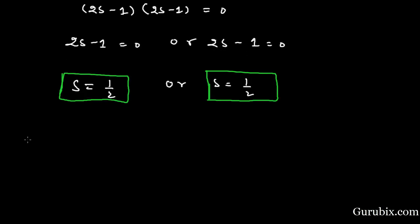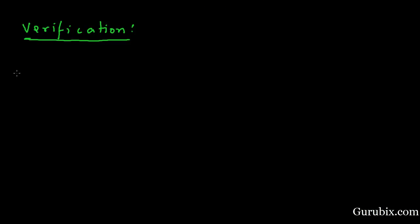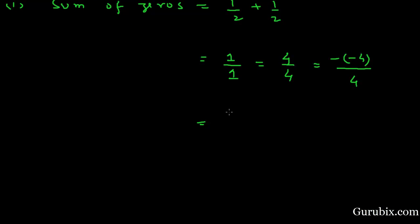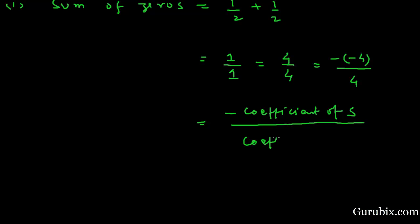Now we shall verify the relationship between the zeros and the coefficients. For the sum of zeros: 1/2 plus 1/2 equals 1, which we can write as 4/4, or as minus(−4) over 4. This ratio equals the ratio of minus the coefficient of s over the coefficient of s². So this relationship is verified.